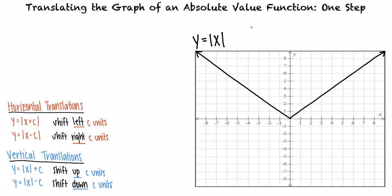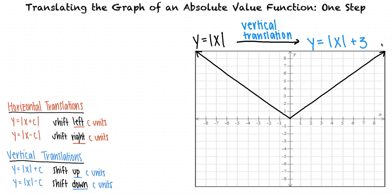How would we translate this to get the graph of y equals the absolute value of x plus 3? Well, since the 3 is outside the absolute value sign, that makes it a vertical translation. Also, since it's plus 3, that means we translate the graph 3 units up.